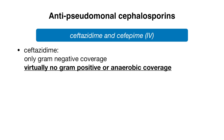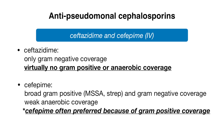The only two cephalosporins that cover pseudomonas are ceftazidime and cefepime. Ceftazidime is a third generation cephalosporin and provides only gram-negative coverage — it does not cover gram-positives or anaerobes. Cefepime, the only fourth generation cephalosporin, offers gram-negative coverage as well as broad gram-positive coverage including staph and strep, but not MRSA. It does offer weak anaerobic coverage, but is not used specifically to cover anaerobes. Because of its broader coverage, cefepime is often preferred and more commonly used in hospital settings.